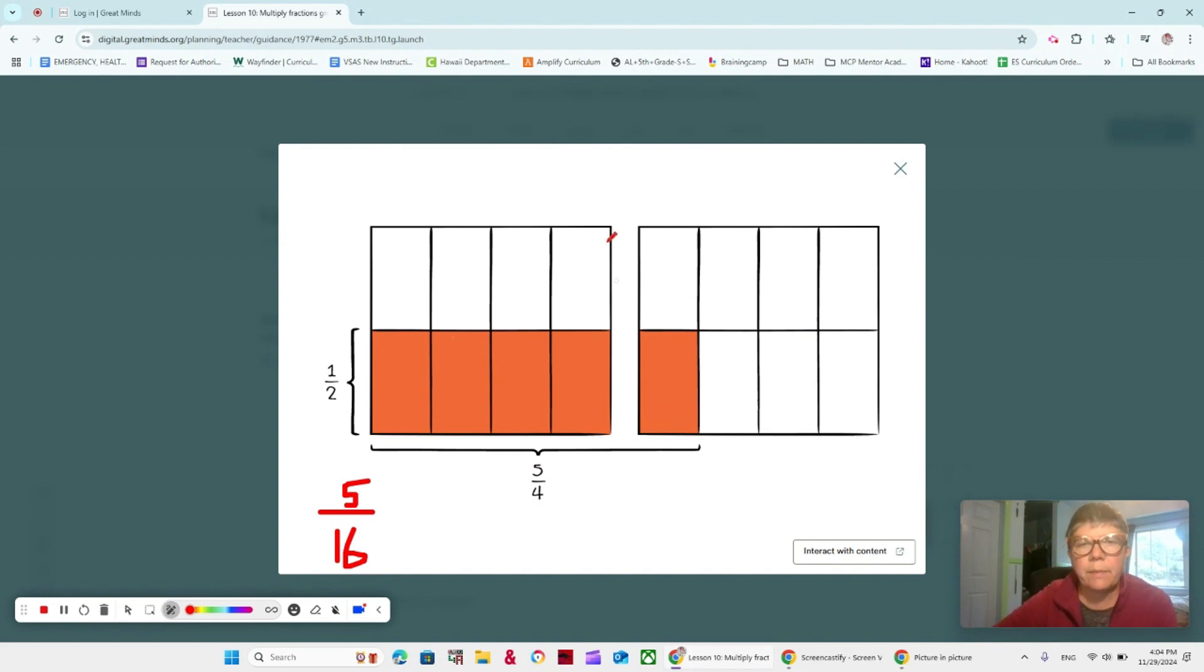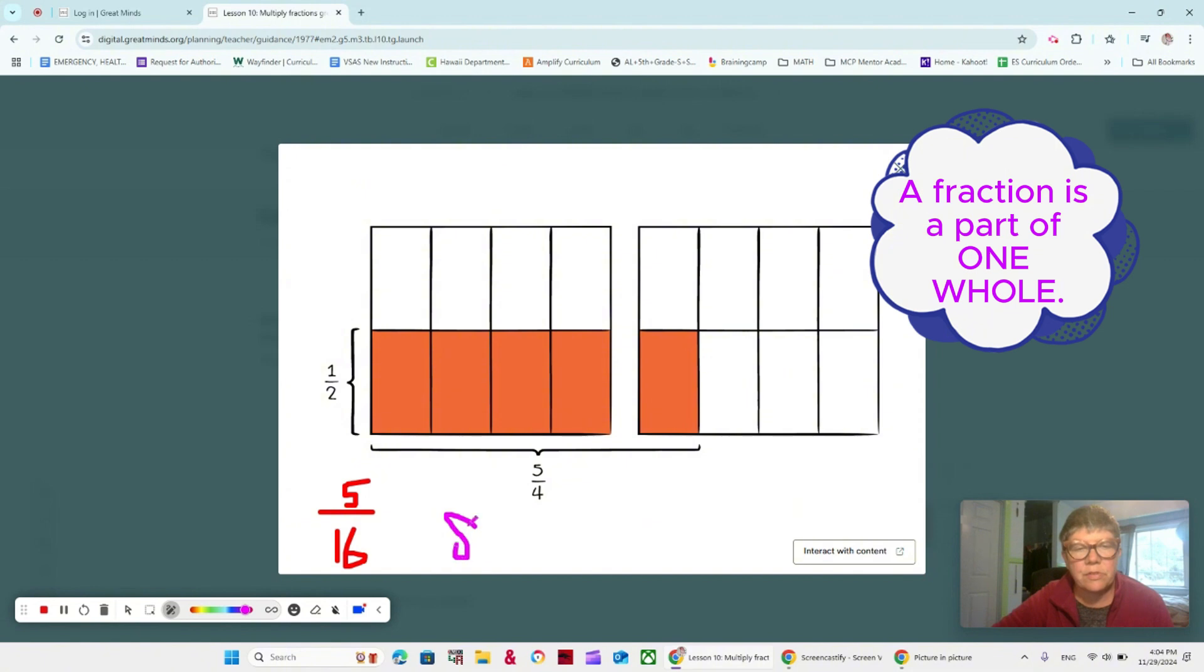But remember when we're talking about fractions, we get our denominator from 1 of them. So it would really be eighths. And it would really be the number of eighths that are colored in, which would be 5 eighths. That makes sense too because 2 times 4 is 8, and 1 times 5 is 5. So what mistake did he make? He added all the pieces together, looked at all 16 pieces, which we could see could be a problem you could make.